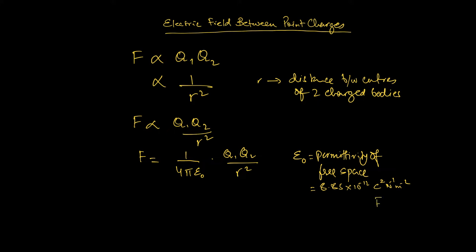In some books you're going to read this unit as farads per meter, and that's okay — we're actually going to use the same thing when we get to the chapter on capacitance. The value of permittivity of air is actually very close to that of a vacuum: epsilon air is 1.0005 times epsilon naught, where naught indicates vacuum. So the equation can be used for the force between charges in a vacuum or in air — it's very, very close.